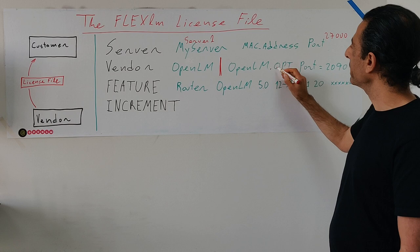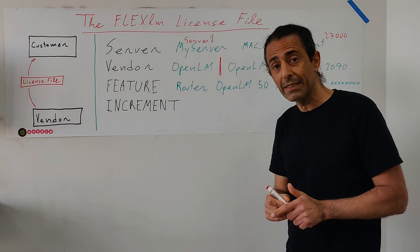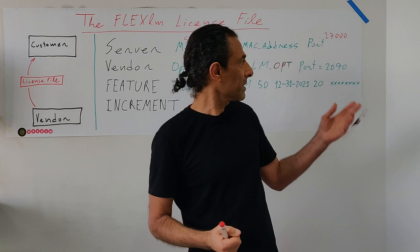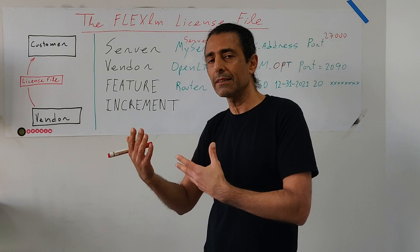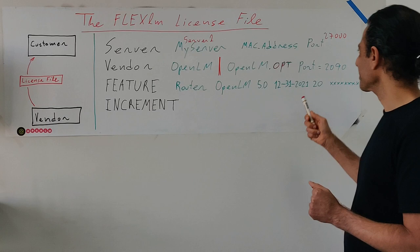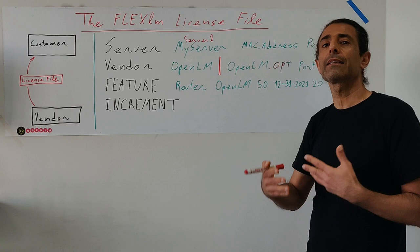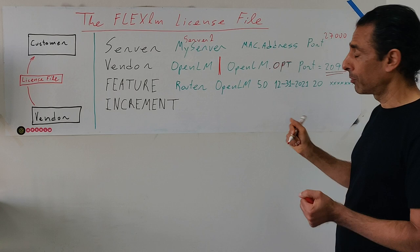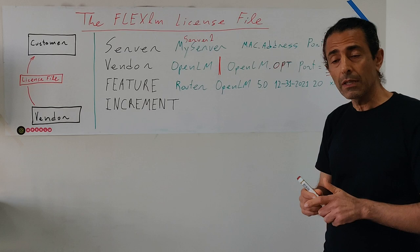Here we have 'OpenLM.opt' — that is actually a file name. This is the FlexLM options file. We specify that there is an options file, and when the license server reads the license file, it knows to also look for the options file. I'll talk about what's inside the options file on another occasion. There is another optional element you can add yourself — that's the vendor port.